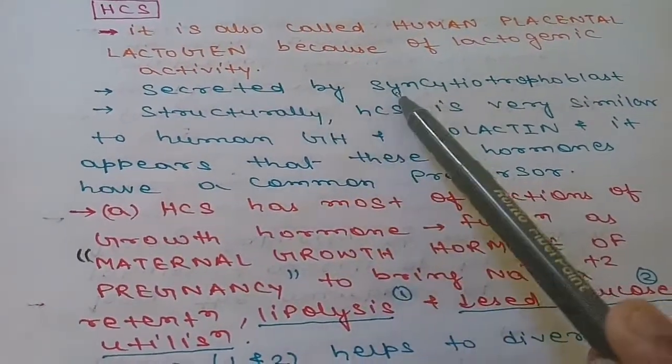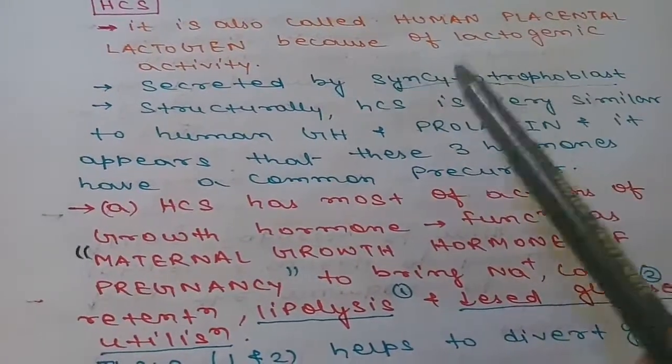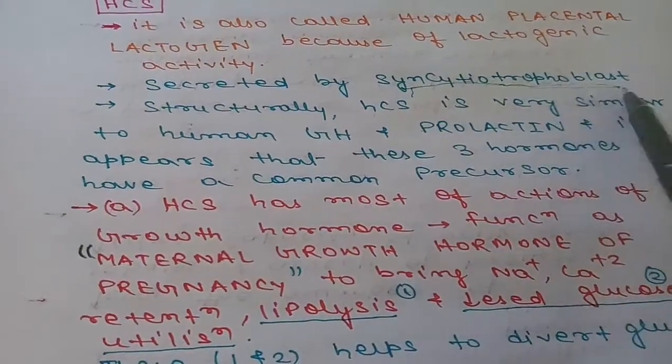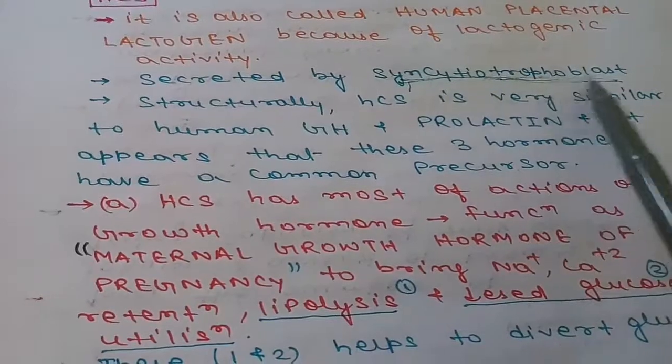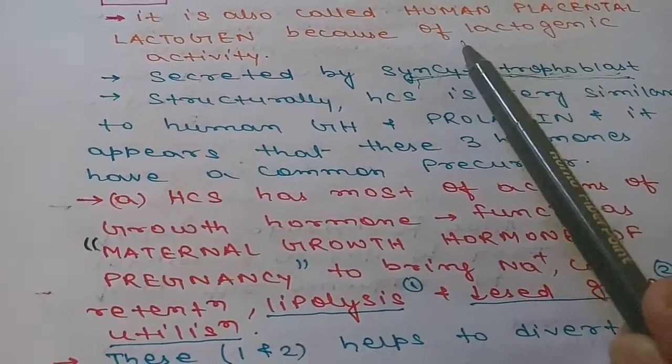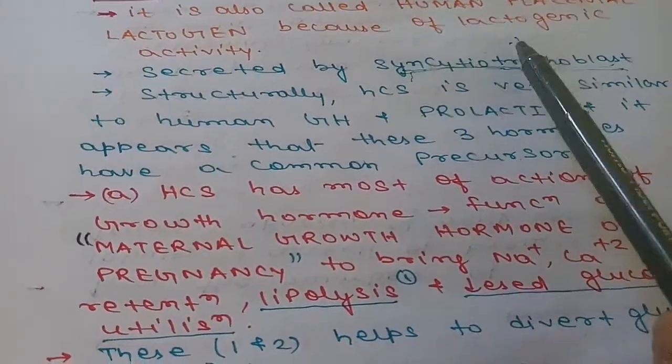The second point, it is secreted by syncytotrophoblast, as HCG was also secreted by syncytotrophoblast. It is the outer layer of the trophoblast because trophoblast has two layers: syncytotrophoblast outer and cytotrophoblast the inner one.